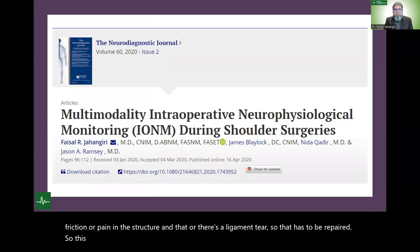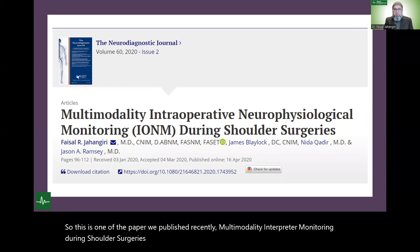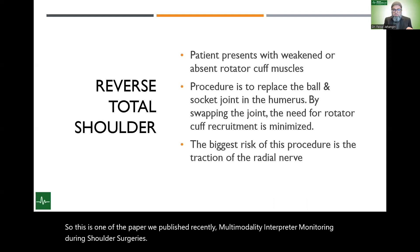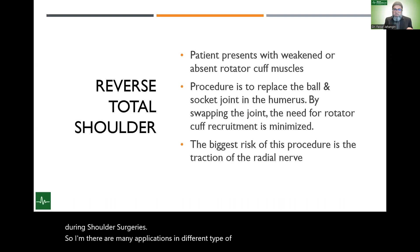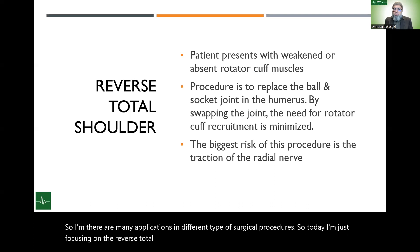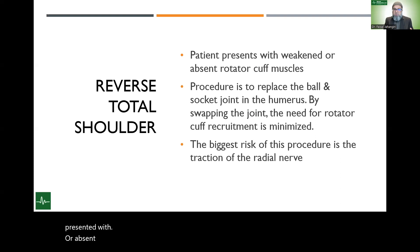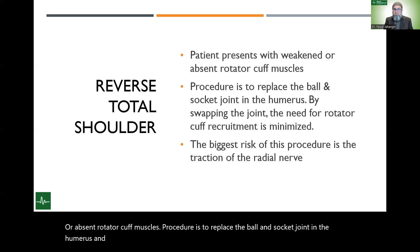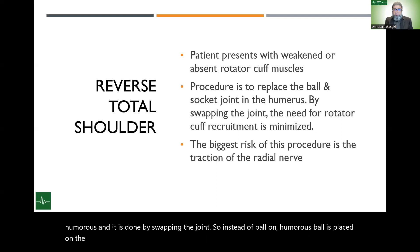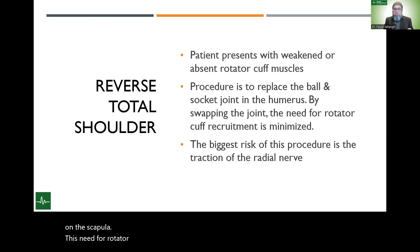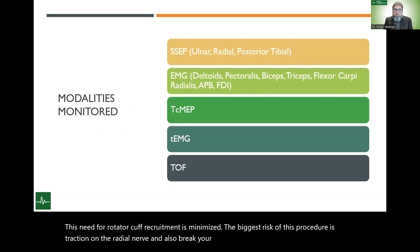This is one of the papers we published recently on multimodality intraoperative monitoring during shoulder surgeries. Today I'm focusing on the reverse total shoulder because that's a different technique. The patient presents with weakened or absent rotator cuff muscles. The procedure replaces the ball and socket joint in the humerus by swapping the joint — instead of the ball on the humerus, the ball is placed on the scapula. The biggest risk is traction on the radial nerve and also the brachial plexus.